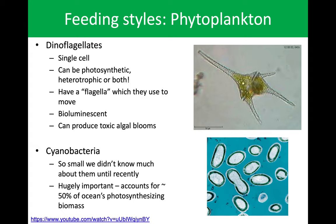Next we have dinoflagellates. We'll have a bunch of these off the coast of California. These are also single-celled and can be photosynthetic, heterotrophic, or both — meaning they can either photosynthesize as autotrophs or eat other organisms as heterotrophs to obtain energy. They have flagella — hence the name dinoflagellate — and they use these flagella to move. They swirl those appendages around, generate a pressure gradient, and use that for propulsion.